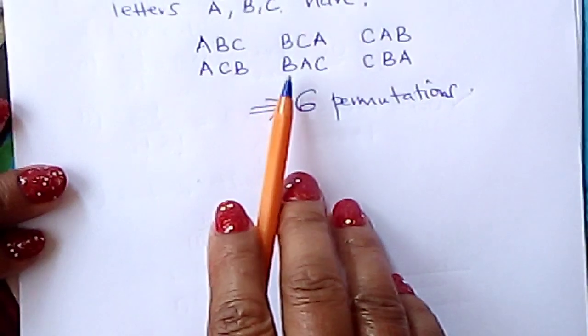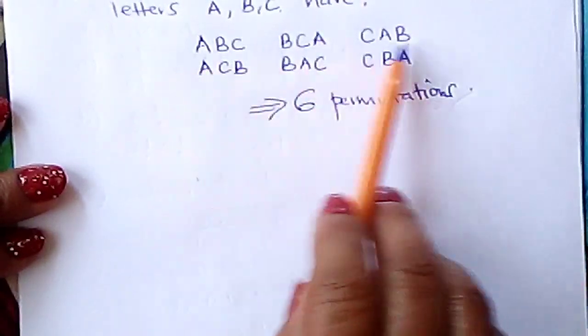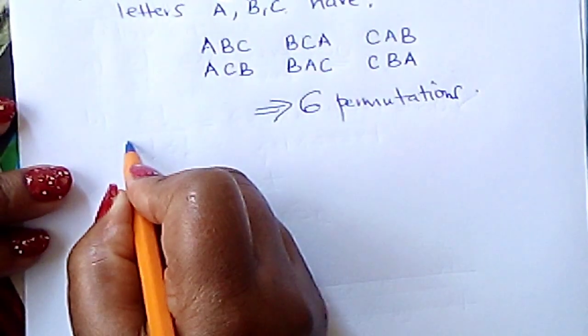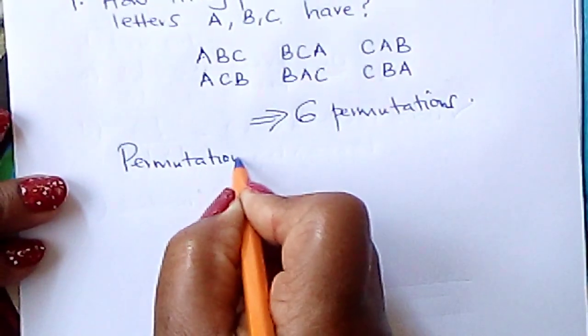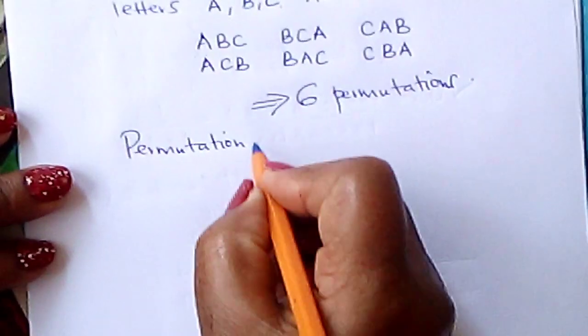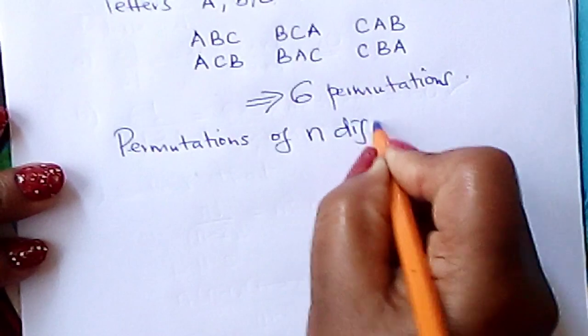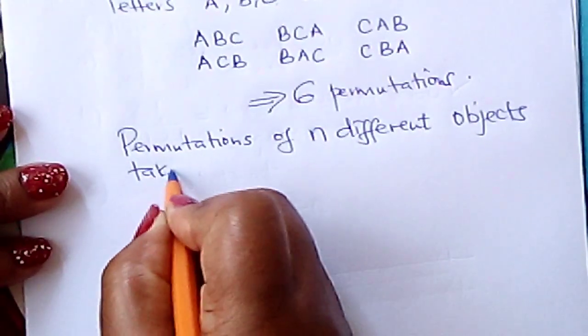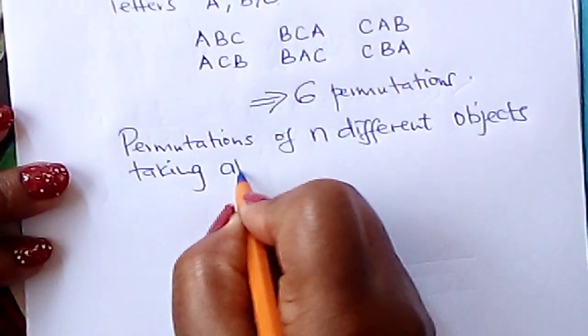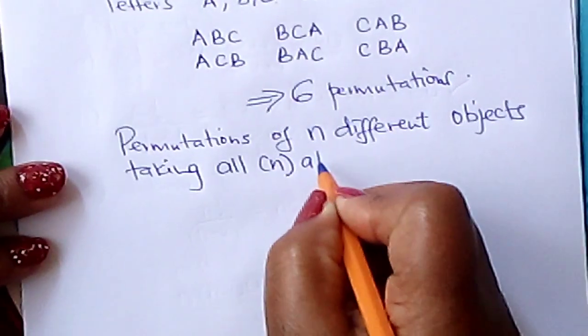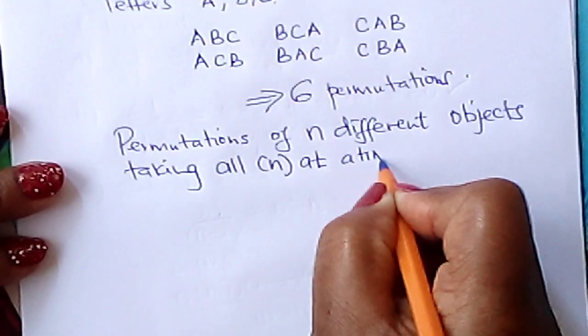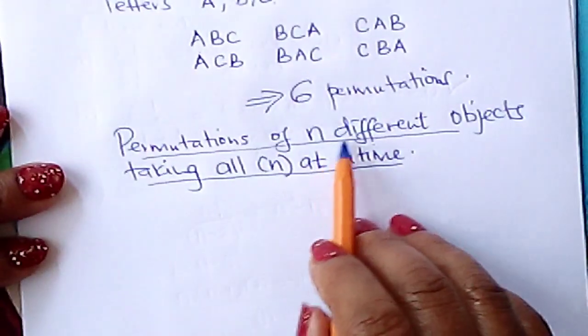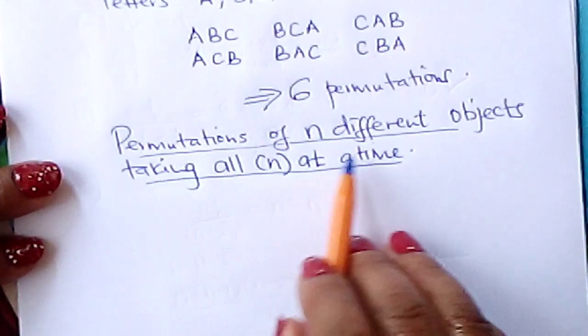For us to be able to come up with the arrangements or permutations, we don't need to do it practically like this. We can use a formula. Instead of doing it practically, let us look at how to get permutations of n different objects, taking all of them at a time.